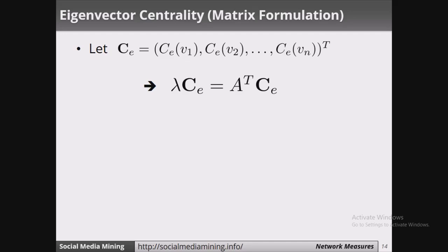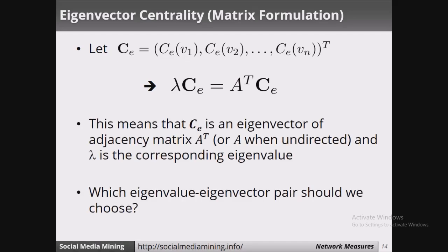If I assume that centrality is a vector matrix, then I can write the formula as lambda times ce equals A^T times ce, where A^T is the adjacency matrix. This means that ce is an eigenvector of the adjacency matrix A^T and lambda is its corresponding eigenvalue. Now the question arises: which eigenvalue and eigenvector pair should we choose?